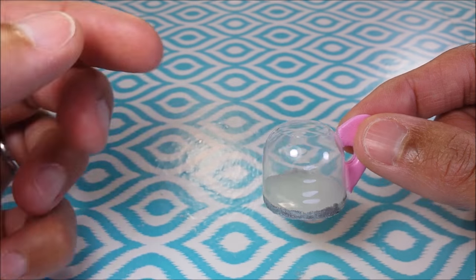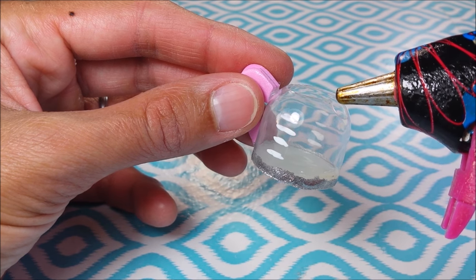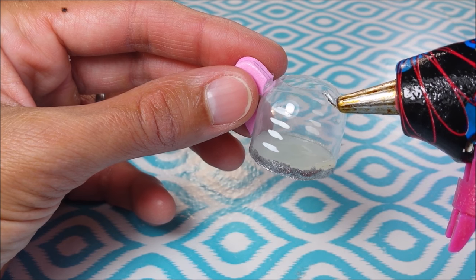This next part is a little bit tricky, so we're just going to make a spout with our hot glue gun. So just adding some hot glue.